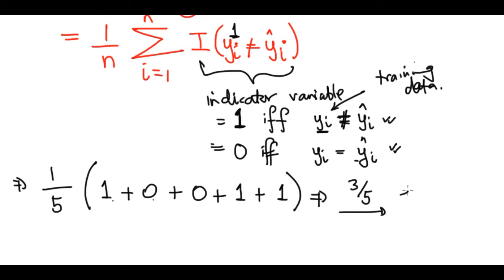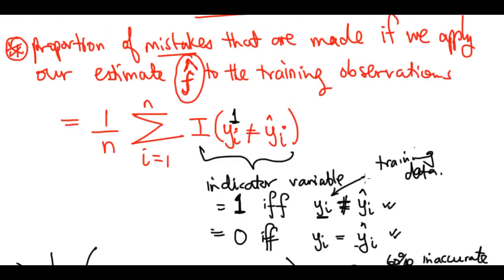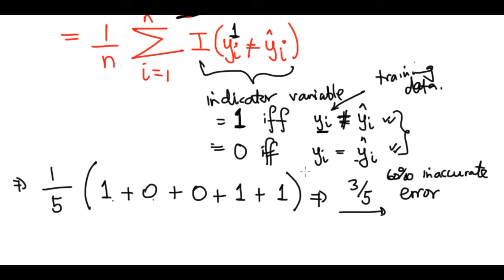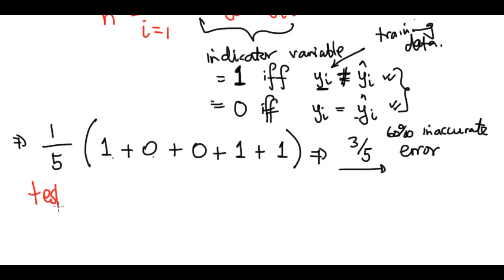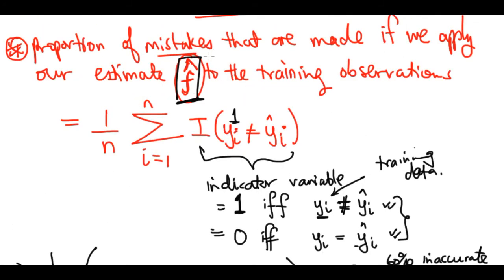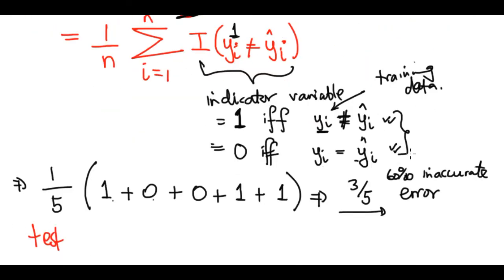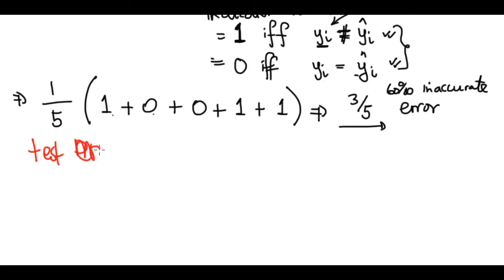A 60% error rate means 60% inaccuracy, which is very high. We would then adjust our f to see if it improves classification performance. As always, what we are really interested in is the test error rate — not the training error rate. In production, we care about the test error rate, so once the training error rate is sufficiently low, we evaluate on the test error rate.